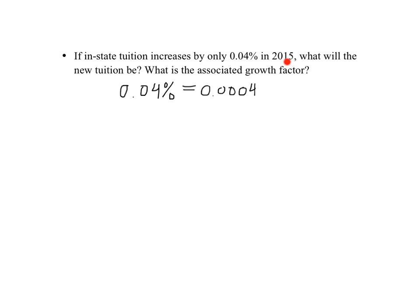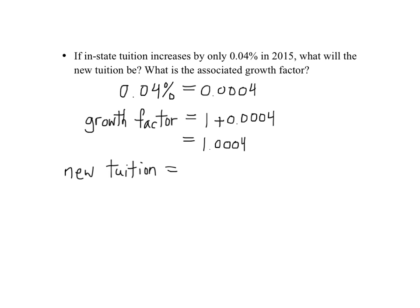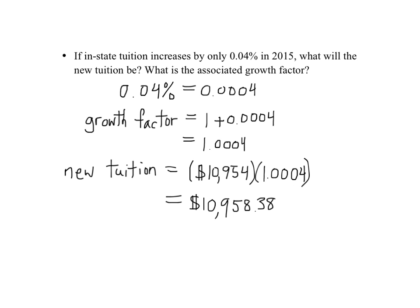The additional number of dollars you would have to pay in 2015 equals merely 0.0004 times the original tuition. Following the same pattern as before, the growth factor will equal 1 plus 0.0004. That turns out to equal $10,958.38, which is only $4.38 higher than the previous tuition.